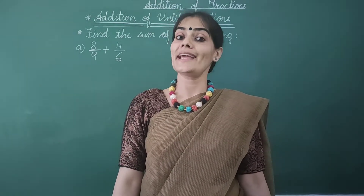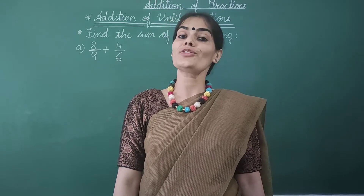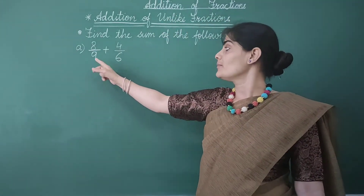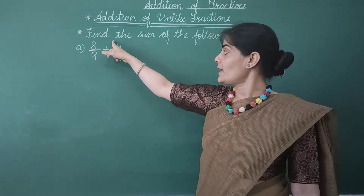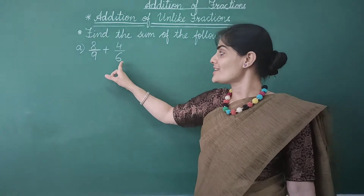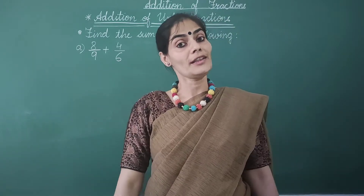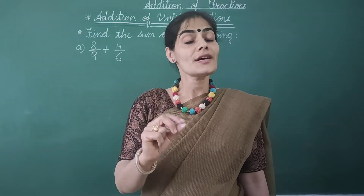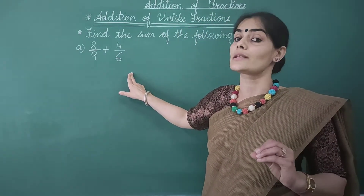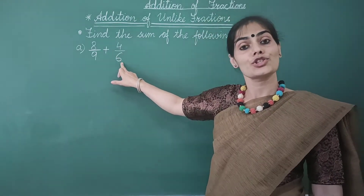Before we begin, let me tell you what are unlike fractions. Unlike fractions are those fractions which have different denominators. For example, 8 by 9 and 4 by 6 — both these fractions have different denominators, so such fractions are called unlike fractions. To find the sum of unlike fractions, we first convert them to equivalent like fractions by finding the LCM of their denominators.